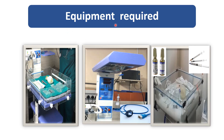All equipment should be checked before birth. For the initial steps of resuscitation, pre-warmed three towels are required, a radiant warmer should be available, a shoulder roll should be ready, and suction catheters of sizes 8, 10, 12, and 14 should be available. The suction machine — either portable or wall-mounted — should have suction pressure set between 80 to 100 mmHg.